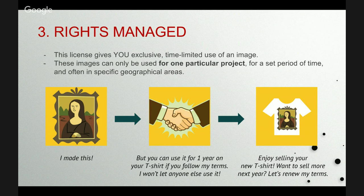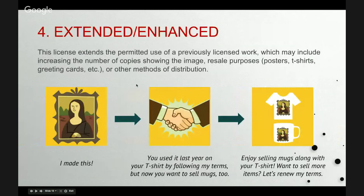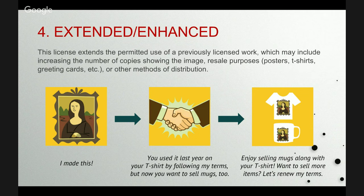Rights Managed is the kind of licensing you deal with at commercial stock sites like Graphic Stock. That license gives you exclusive, time-limited use of an image. These images can only be used for one particular project, for a set period of time, and quite often only in one specific geographical area. Extended Enhanced Licensing extends from your original license, allowing you to use the licensed material on other things — for example, if you bought it for a t-shirt, it would allow you to also use it on a book, a cup, a website, and so on.